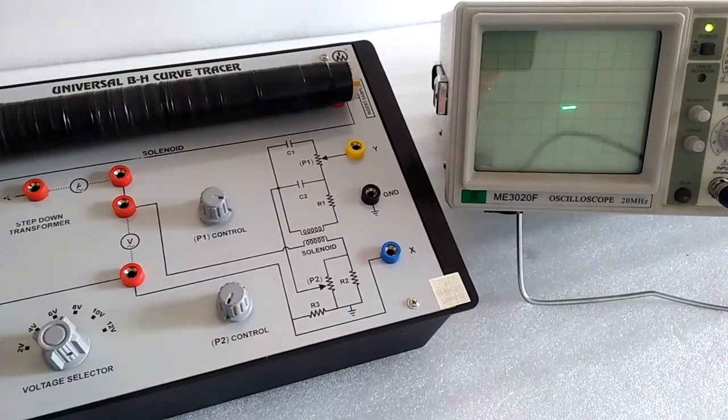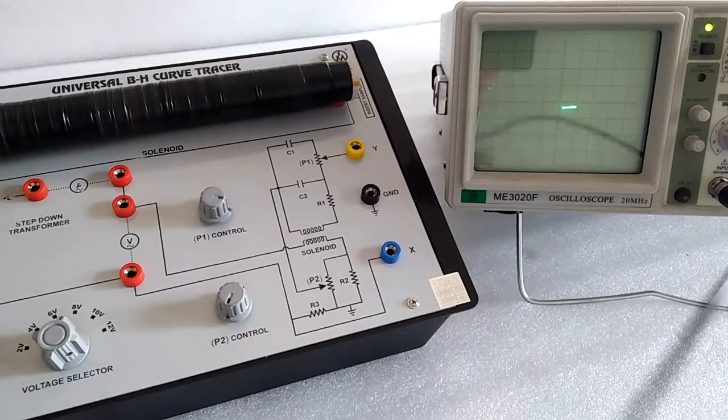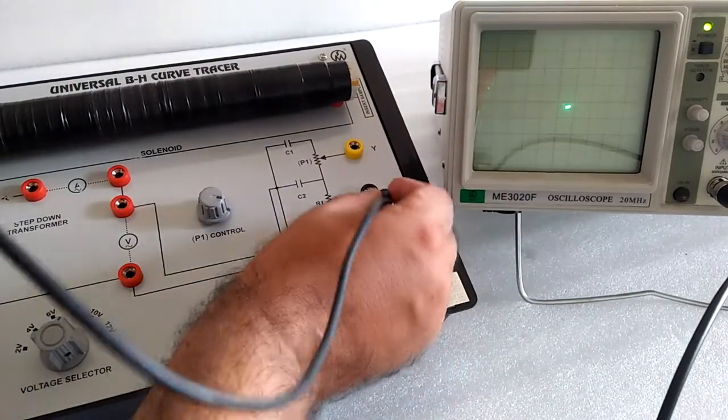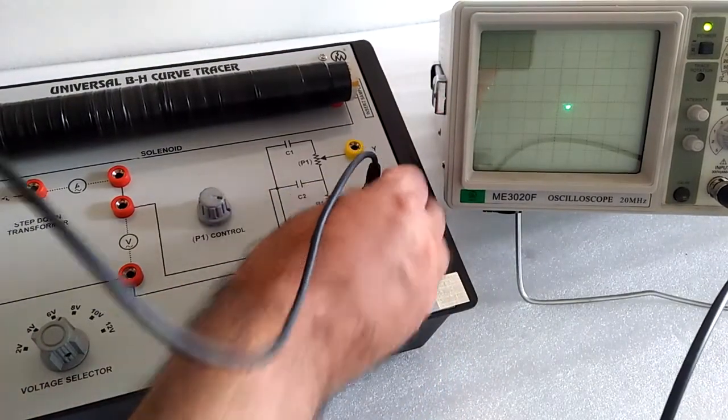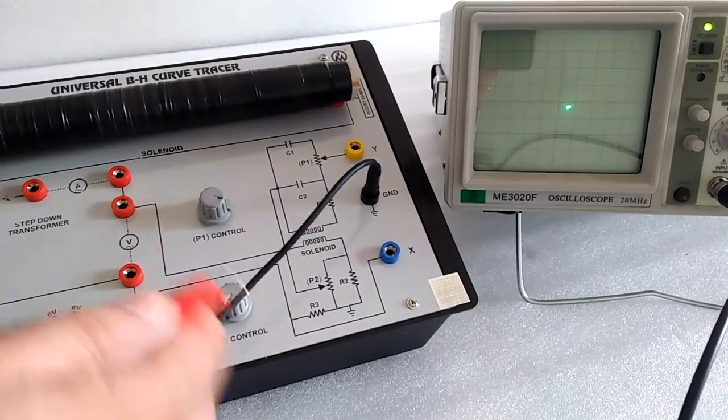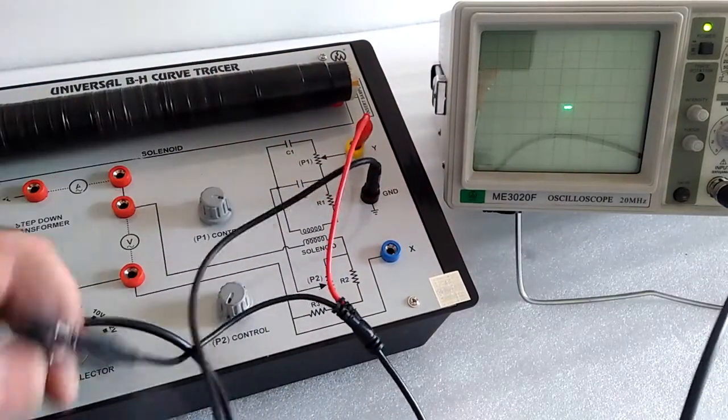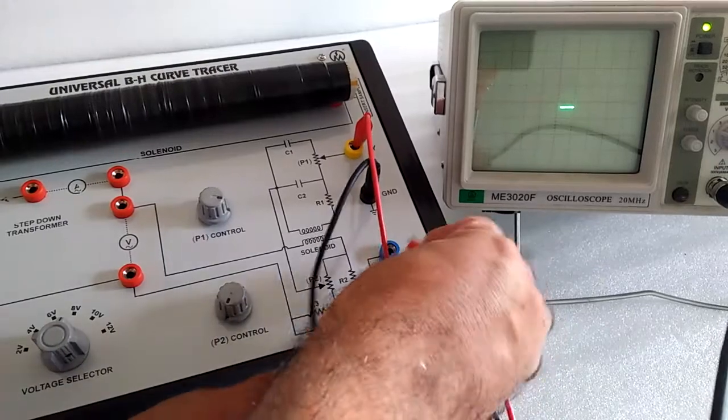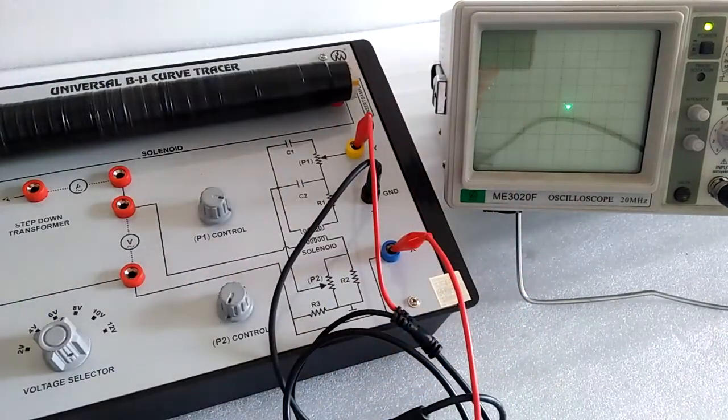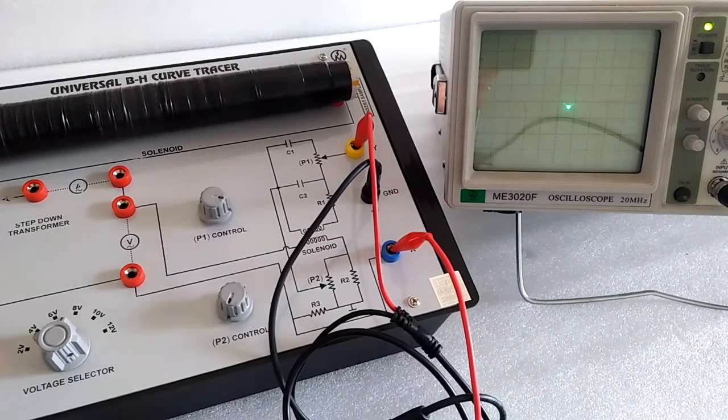After putting the CRO in XY mode, connect and lock the ground. Now connect the Y channel signal over here, and the X channel signal over here.